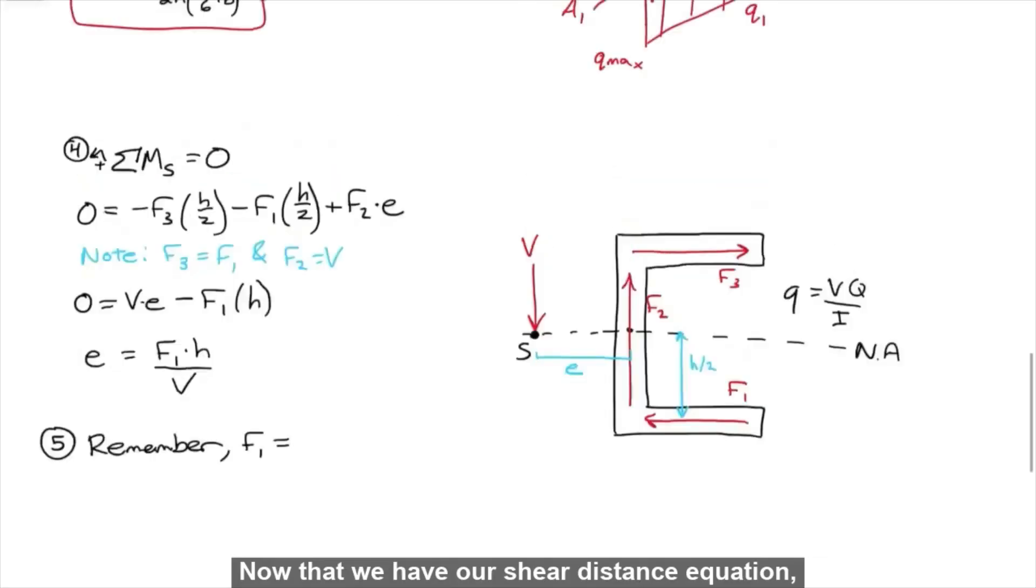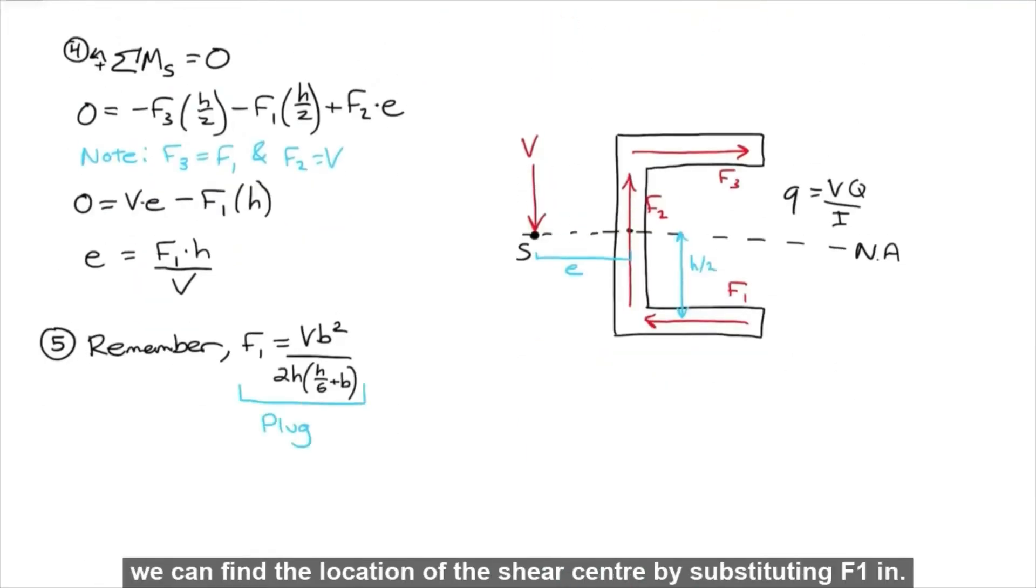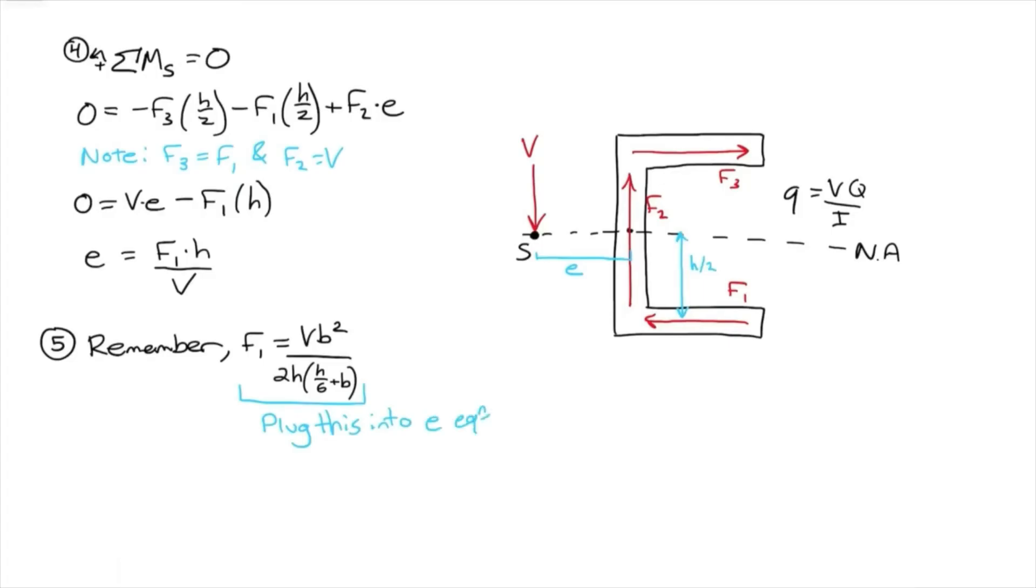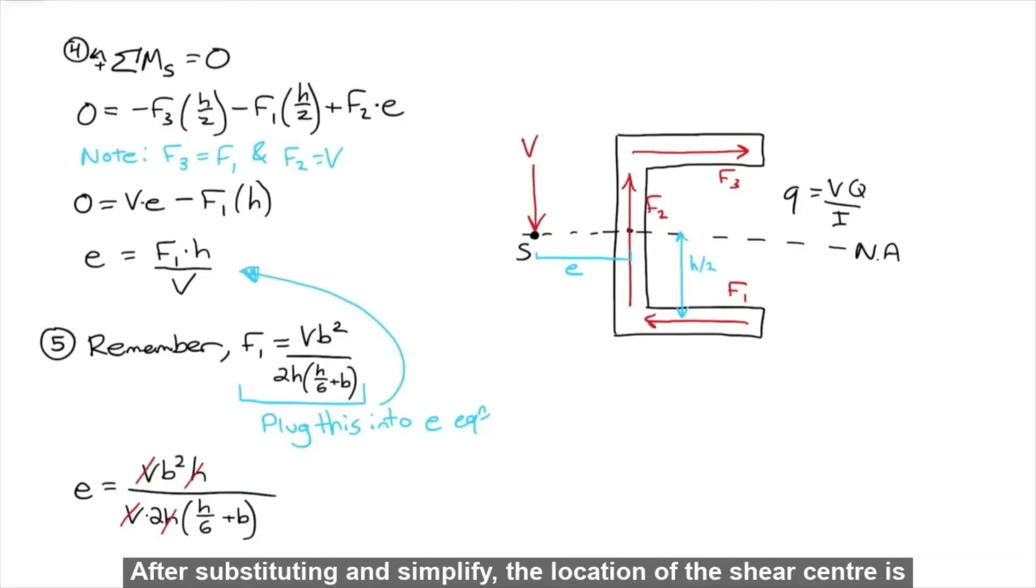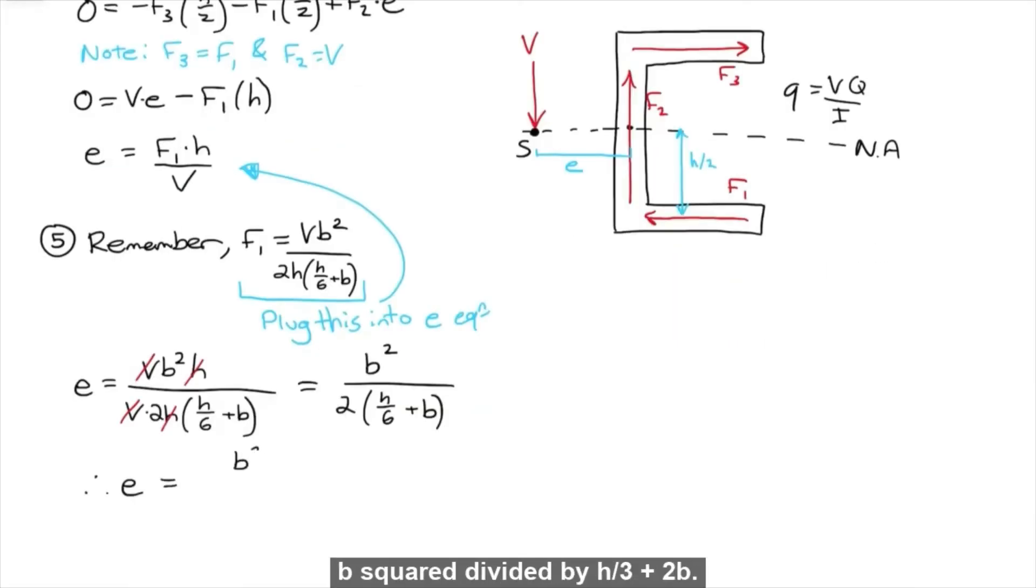Now that we have our shear distance equation, we can find the location of the shear center by substituting F1 in. After substituting and simplifying, the location of the shear center is B squared divided by H over 3 plus 2B. That is the final answer.